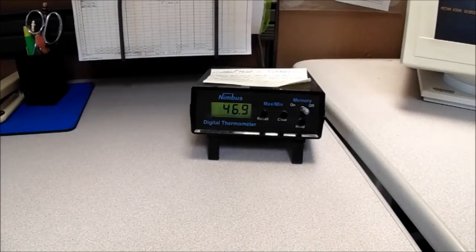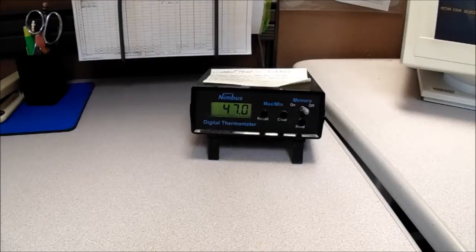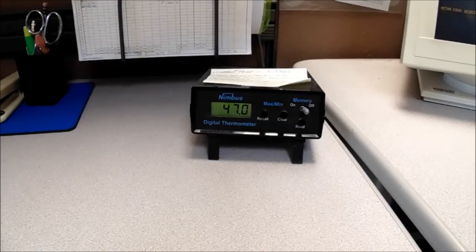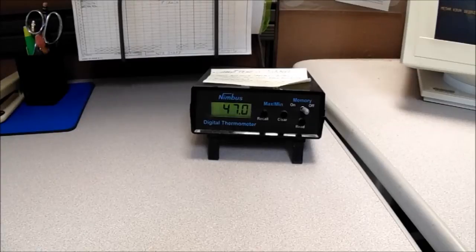Alright, let's go ahead and get started. What you see here is the maximum minimum temperature system called MMTS, and this is a Nimbus unit. The digital readout on the left hand side, which you see is reading 47.0 degrees, that's the current temperature at this time. Now the observation part is outside, but this is the indoor temperature readout box.